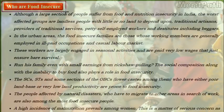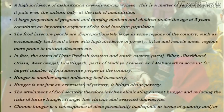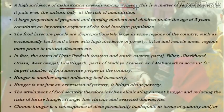Who are the food insecure groups of India? The economically backward states, the tribal and remote areas, and areas prone to natural disasters like droughts and floods have a higher percentage of food insecure people. States like Uttar Pradesh, Bihar, Jharkhand, Orissa, West Bengal, Chhattisgarh, parts of Madhya Pradesh and Maharashtra account for the largest number of food insecure people. A high incidence of malnutrition prevails among women, which puts even the unborn baby at risk. Hunger is both a cause and effect of poverty and indicates food insecurity.